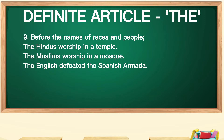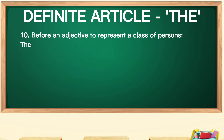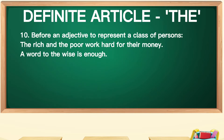The ninth point: the is used before the names of races and people. For example: 'The Hindus worship in a temple.' 'The Muslims worship in a mosque.' The tenth point: the is used before an adjective to represent a class of persons. For example: 'The rich and the poor work hard for their money.' 'A word to the wise is enough.'